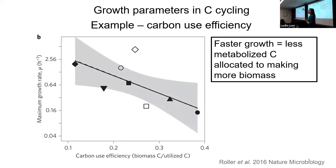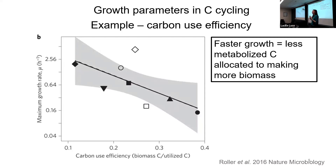To do that, we're going to talk about something called carbon use efficiency. This graph is showing maximum growth rate on the y-axis and carbon use efficiency — the proportion of carbon used that ends up as biomass — on the x-axis. What this landmark paper found is that generally, the faster a microorganism grows, the less efficient it grows, which means less of the carbon it eats ends up as more cells, and more of it usually ends up as carbon dioxide and other byproducts.